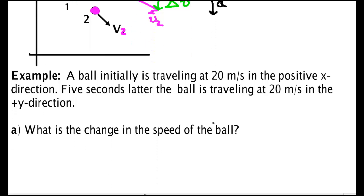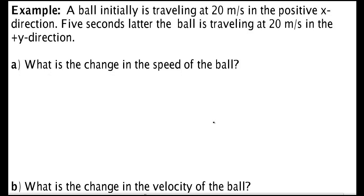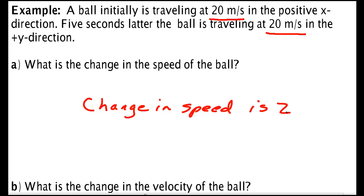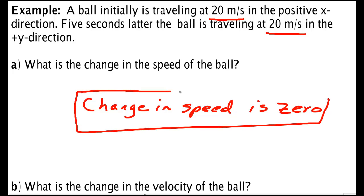Let's look at this with some numbers. A ball is initially traveling at 20 meters per second in the positive x direction. Five seconds later, the ball is traveling 20 meters per second in the y direction. First question: what's the change in the speed of the ball? Speed means only the magnitude — the original magnitude was 20 meters per second and the final magnitude is 20 meters per second. The change in speed is zero. However, the thing we're interested in is not change in speed but change in velocity, which is connected to acceleration and therefore to forces.